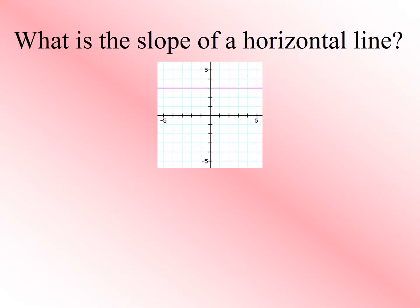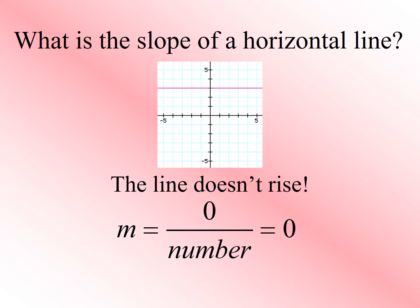So what's our slope when we have a horizontal line? Well, this line doesn't rise up, so our rise is zero. We're going to have an answer of zero. This line has a slope of zero.